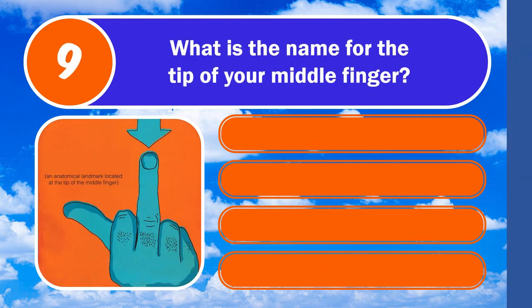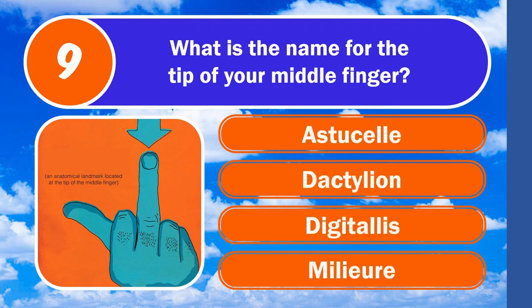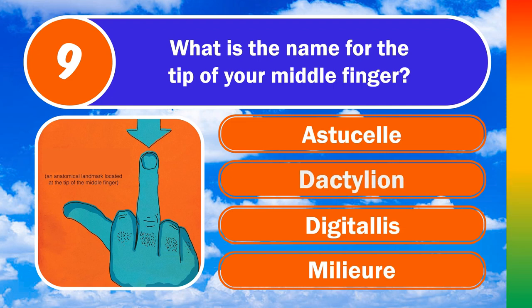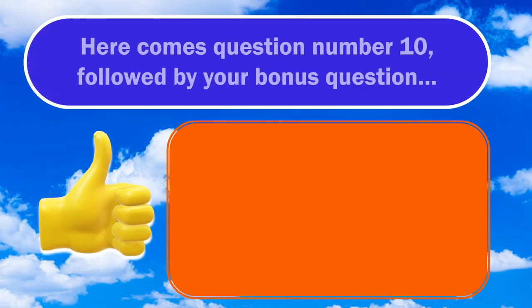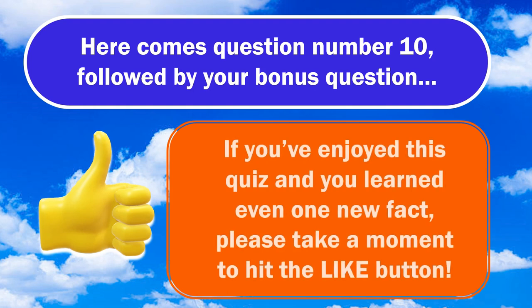Question nine: what is the name for the tip of your middle finger? Is it Asktosell, Dactylion, Digitalis, or Milieu? The answer is dactylion.